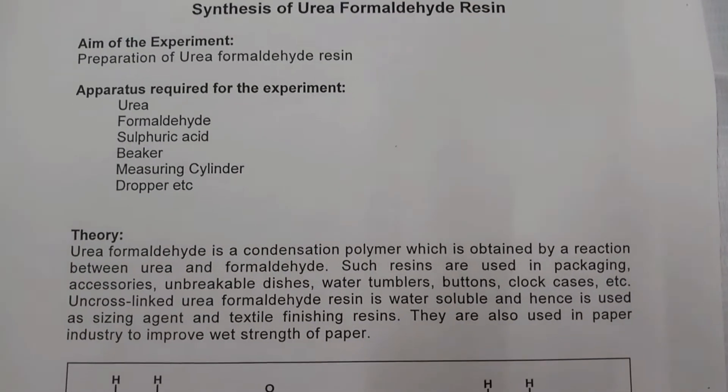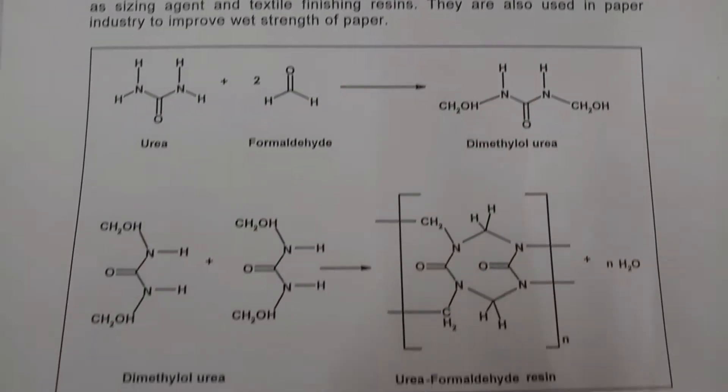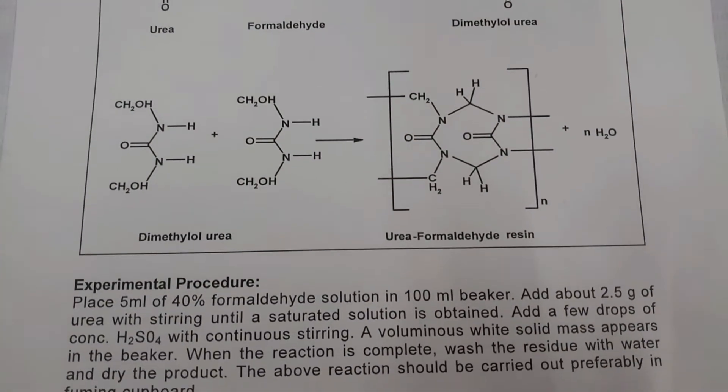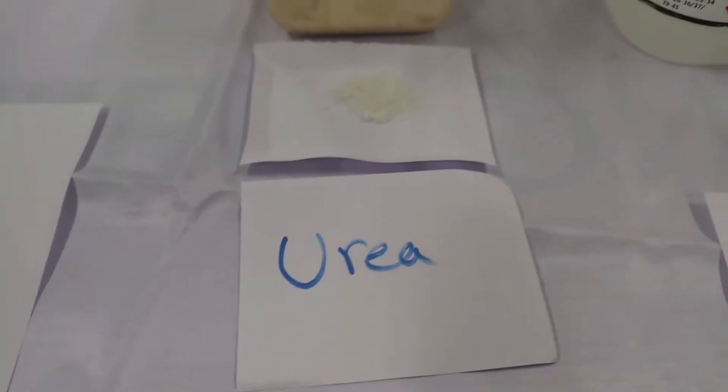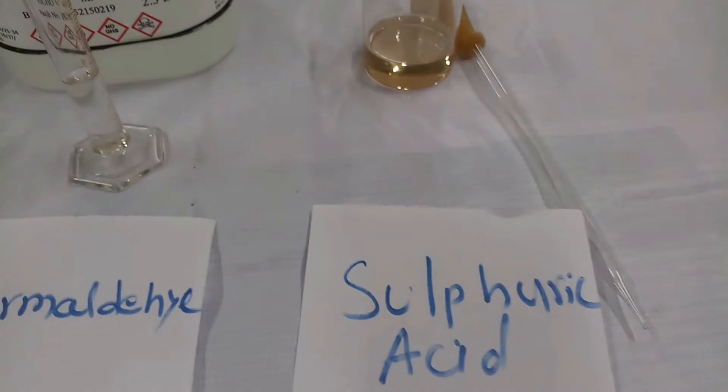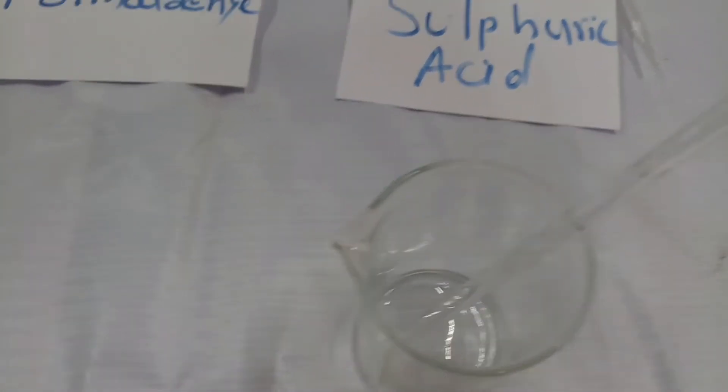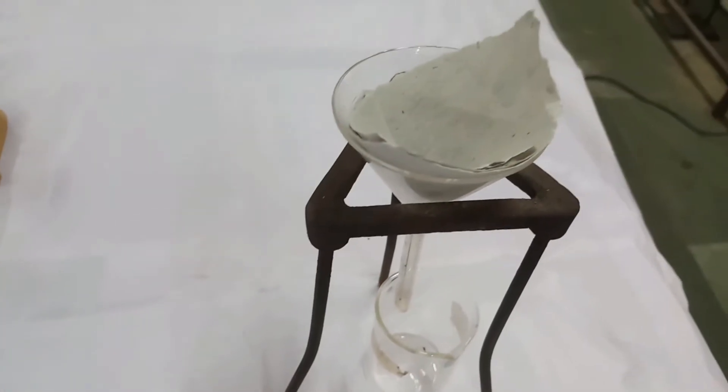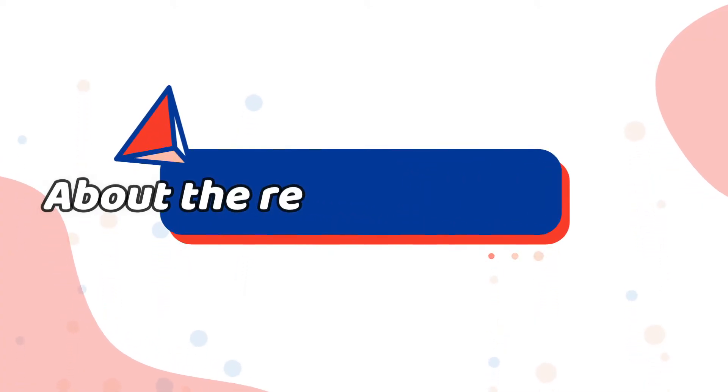Today we are going to see the synthesis of urea formaldehyde resin. The aim of the experiment is preparation of urea formaldehyde resin. Apparatus required are urea, formaldehyde, sulfuric acid, beaker, measuring cylinder, dropper, etc. It's a condensation polymerization reaction between urea and formaldehyde.